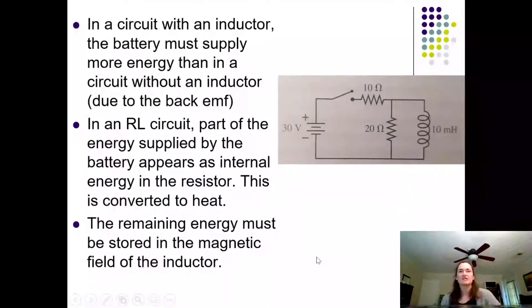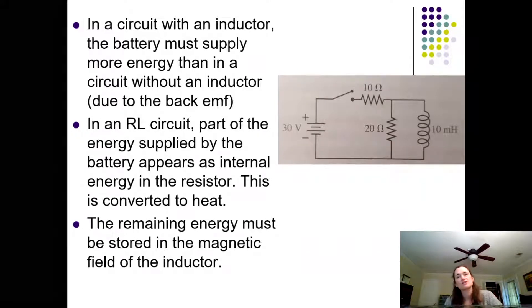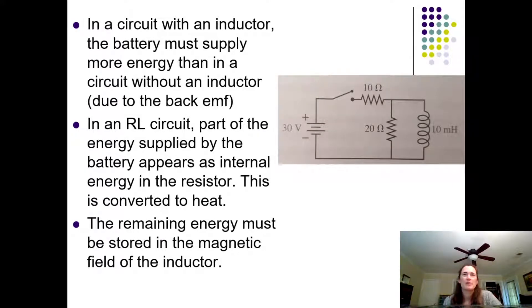Remember we've been talking about RL circuits, or circuits with resistors and inductors. In a circuit with an inductor, the battery has to supply more energy than in a circuit without an inductor. This is due to the back EMF the inductor generates. In an RL circuit, part of the energy supplied by the battery appears as internal energy in the resistor, which is converted to heat. But the remaining energy has to be stored in the magnetic field of the inductor.